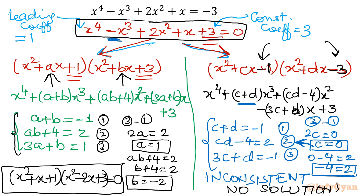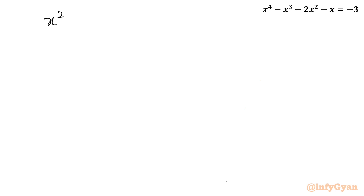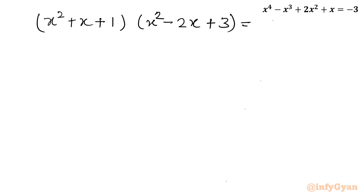In totality, (x² + x + 1)(x² − 2x + 3) is the correct factorization of the given quartic equation. So we have to solve (x² + x + 1)(x² − 2x + 3) = 0, solving both quadratic equations.